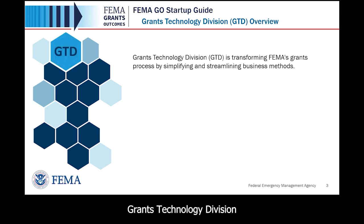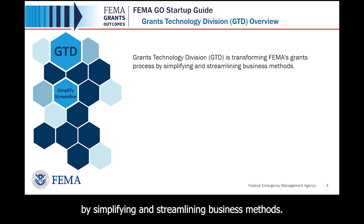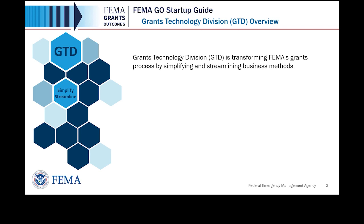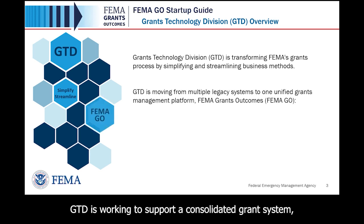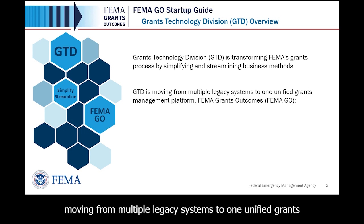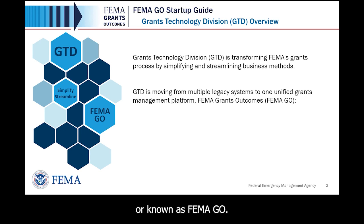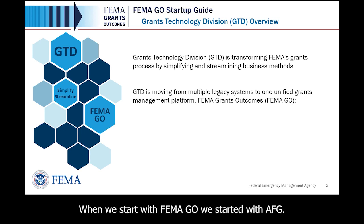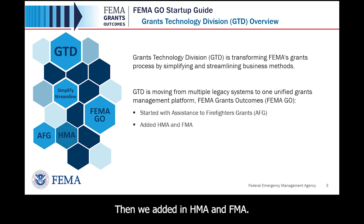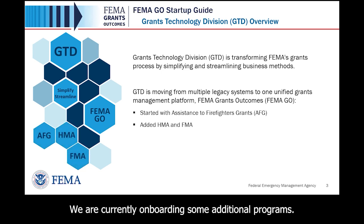Grants Technology Division: GTD is transforming FEMA grants by simplifying and streamlining business methods. GTD is working to support a consolidated grant system, moving from multiple legacy systems to one unified grants management platform called FEMA Grants Outcomes, or FEMA GO. FEMA GO started with AFG, then added HMA and FMA, and is currently onboarding some additional programs.